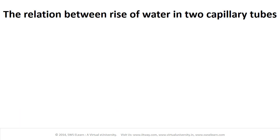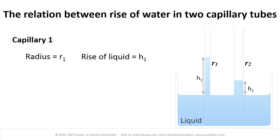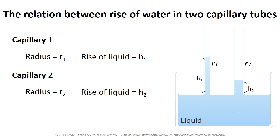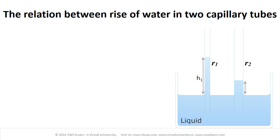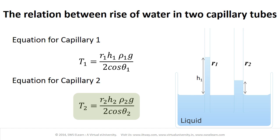The relation between the rise of water in two capillary tubes dipped in the same liquid. As shown in the figure, there are two capillary tubes dipped in the liquid. The first has radius R1 and liquid rise H1; the second has radius R2 and liquid rise H2. Writing the equations for capillary effect: T1 equal to R1 H1 ρ1 G divided by 2 cosθ1, and T2 equal to R2 H2 ρ2 G divided by 2 cosθ2.